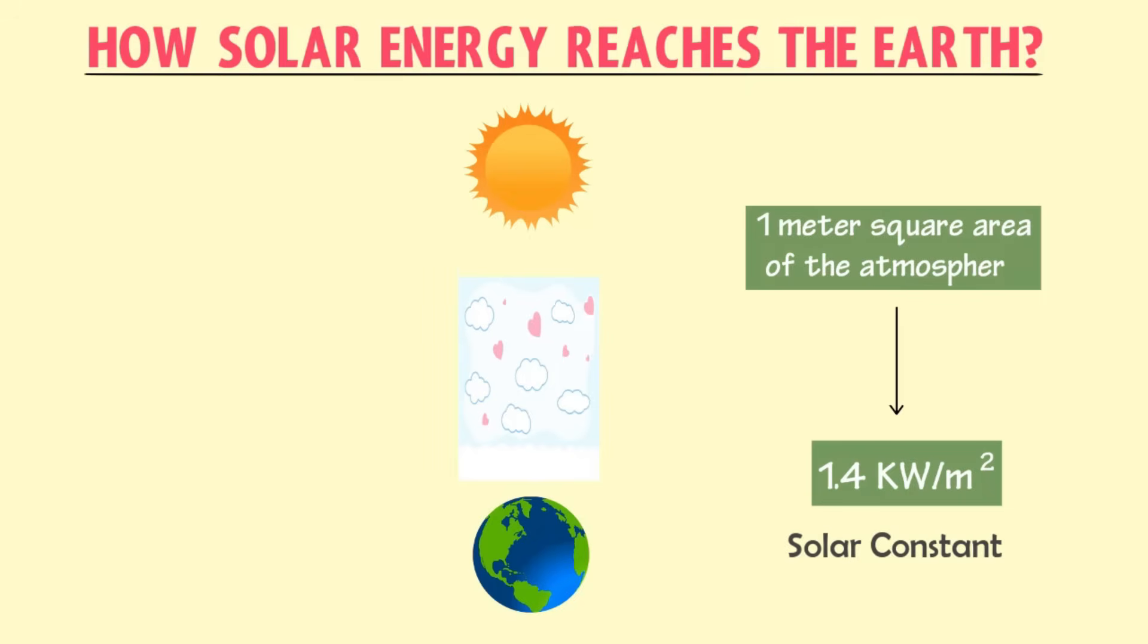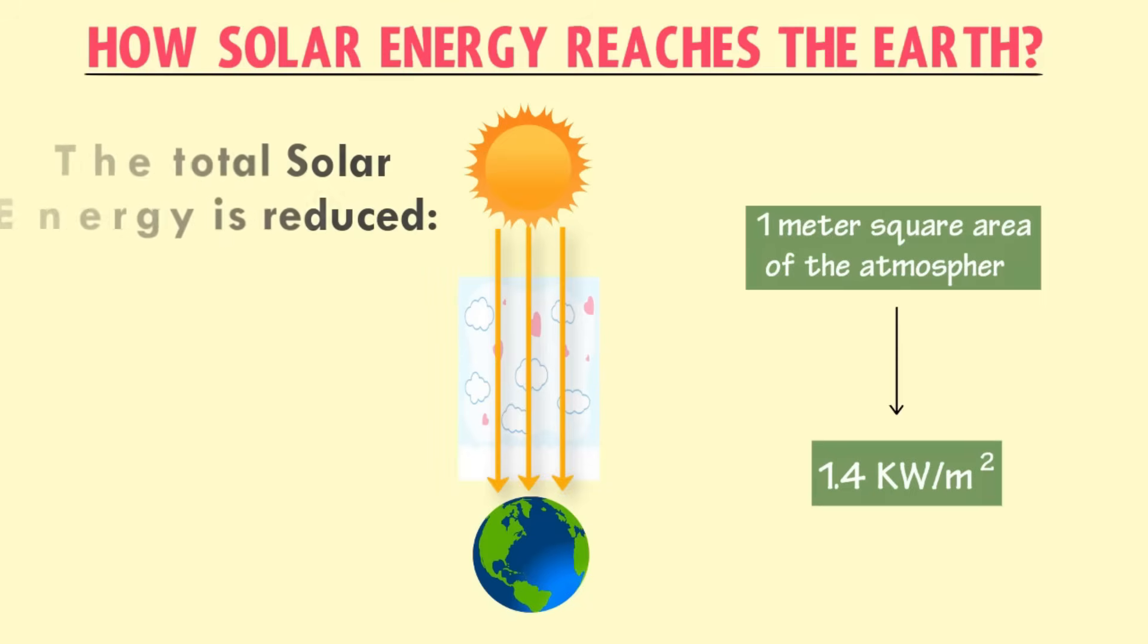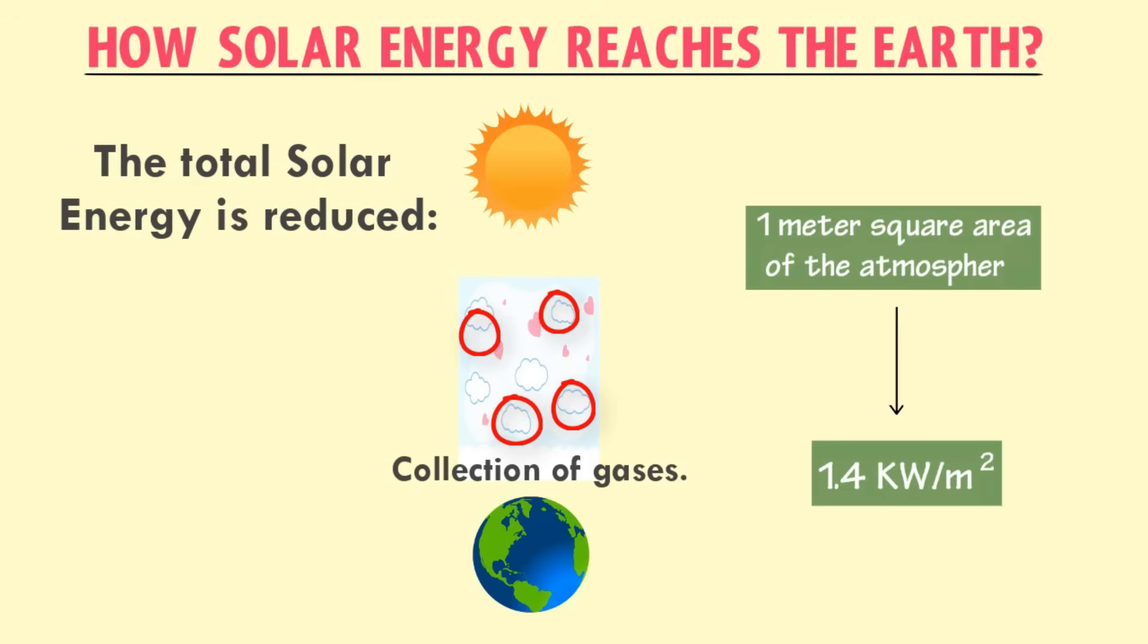It means the solar energy absorption of our atmosphere is 1.4 kilowatts per meter square at the outer side. Now, passing through the atmosphere, the total solar energy is reduced due to the following reasons. As we know that atmosphere is a collection of different gases. Hence, the solar energy is absorbed by the gas particles, water vapors, dust particles, and reflection.